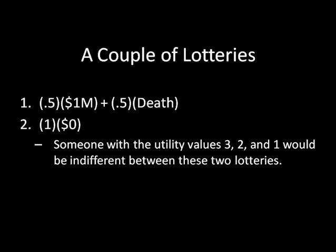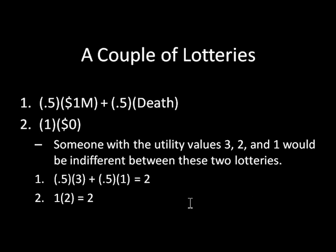The way we see that is by simply replacing these outcome terms with the utility values associated with them. So instead of one million dollars, we replace that with three; instead of death, we replace that with one; and instead of zero dollars, we replace that with two. If we just do the simple math: 0.5 times three plus 0.5 times one equals two, and one times two equals two. So the expected utilities for both of these lotteries are equal, and therefore this person is indifferent between these two lotteries.